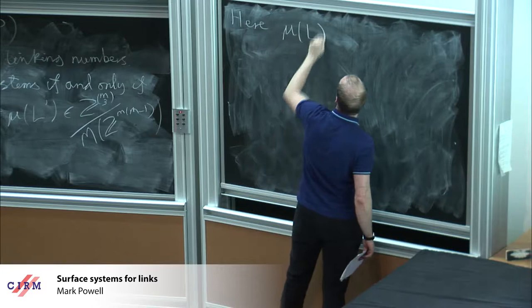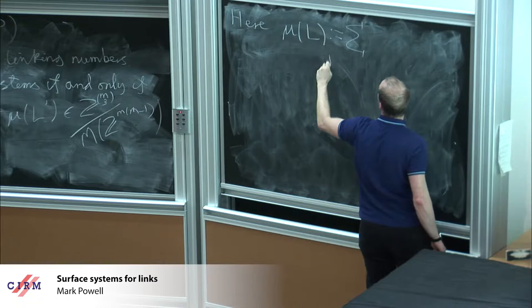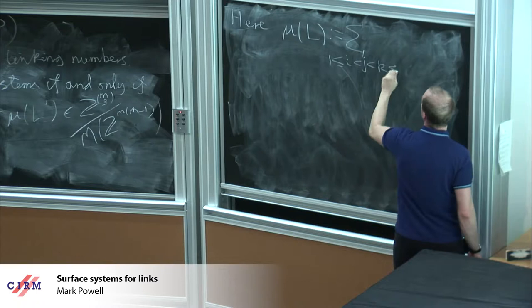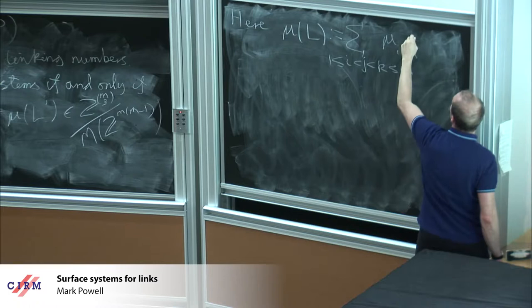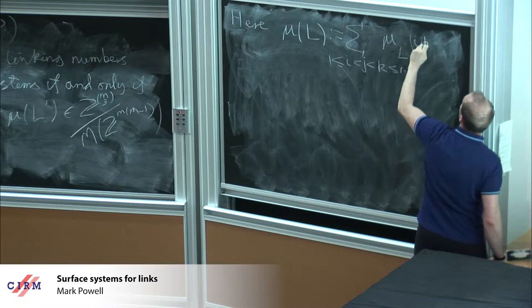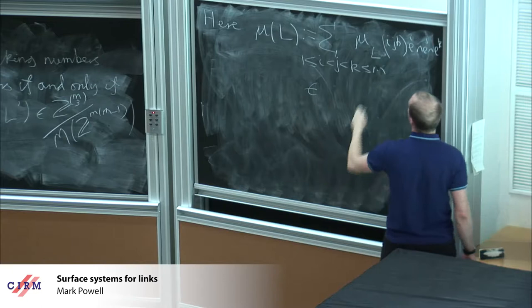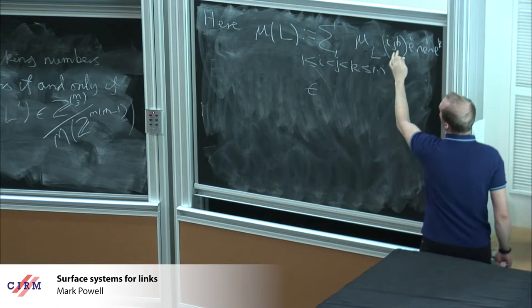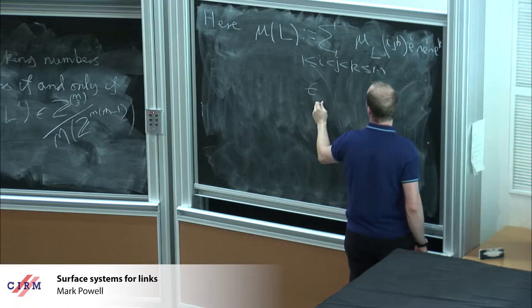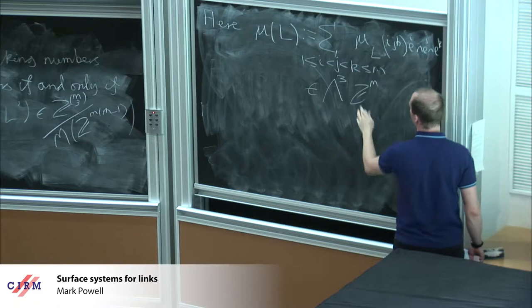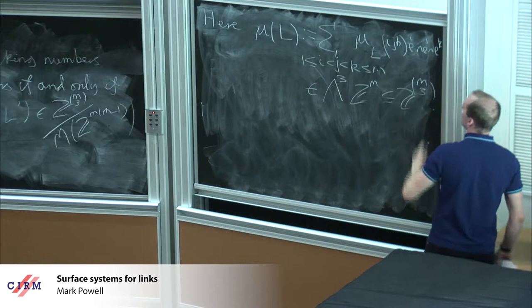First of all, I want to write this in terms of exterior algebra as e_I wedge e_J wedge e_K. This is just a way of bookkeeping a collection of possible length-three multi-indices from the numbers one to m. I think of that as in the third exterior product of Z^m, which is isomorphic to Z^(m choose 3).